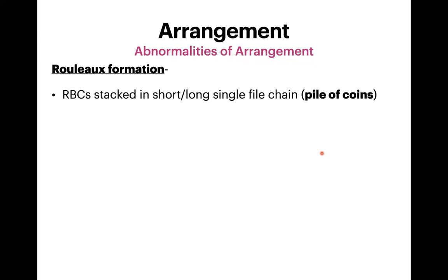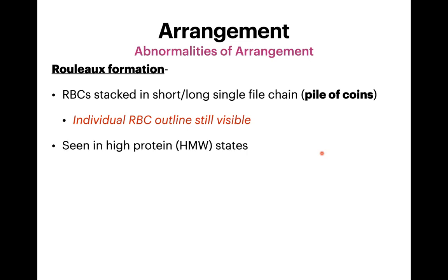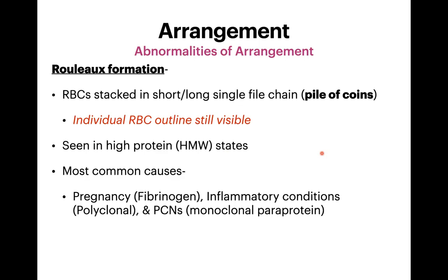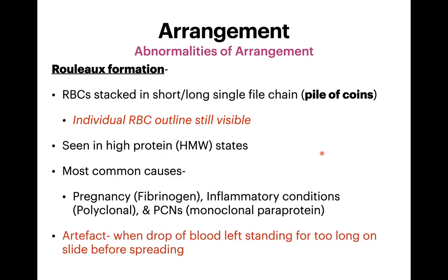The first is rouleaux formation, where RBCs take short and long single-file chain arrangements like a pile of coins. Importantly, individual RBC outlines are still visible in rouleaux — this differentiates it from agglutination. Some degree of rouleaux is normally seen at the head end of the PBF, but not in the body and tail. It is seen in high molecular weight protein states: pregnancy (elevated fibrinogen), inflammatory conditions (polyclonal immunoglobulins), and plasma cell neoplasia (monoclonal paraprotein). It can also appear as an artifact when blood is left standing too long before the smear is made.